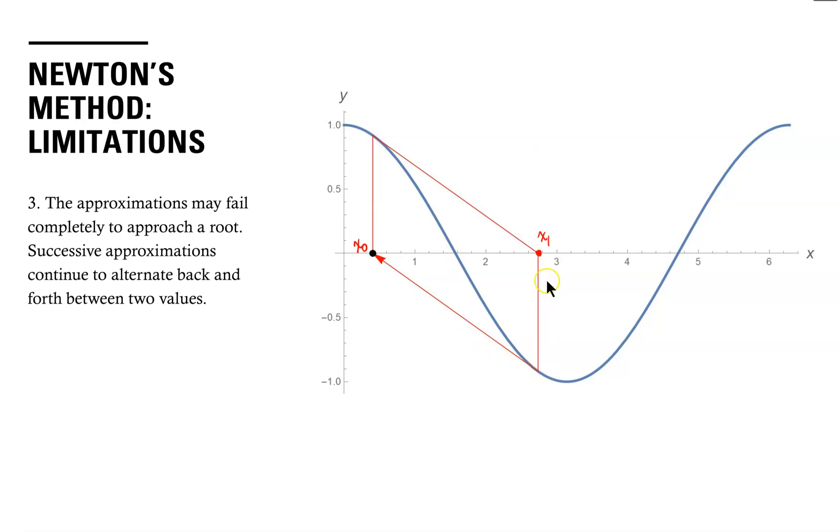And then if we find the tangent line for x1, notice that we're coming back to our initial approximation, so x2 would be the same as x0. And then if we use x2 and create the tangent line and follow that to its root, we'll see that x3 is the same as x1.